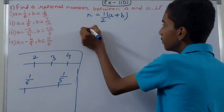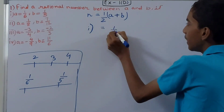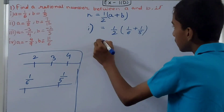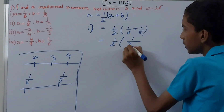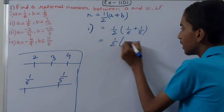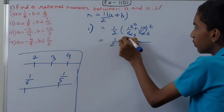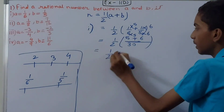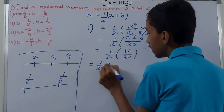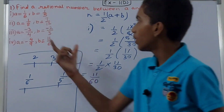For part (a), a = 1/6 and b = 1/5. Applying the formula: n = 1/2 × (1/6 + 1/5). The LCM of 6 and 5 is 30, so 1/6 + 1/5 = (5 + 6)/30 = 11/30. Therefore n = 1/2 × 11/30 = 11/60. The rational number between 1/6 and 1/5 is 11/60.